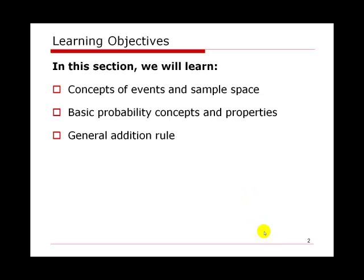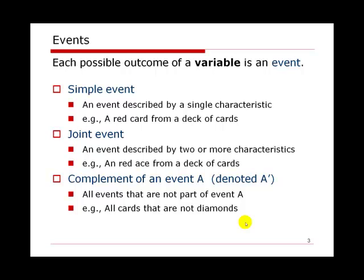An event is related with a variable. Each possible outcome of a variable is an event. Depending on how we describe the event, an event can be a simple event or a joint event. For a simple event, that is an event described by a single characteristic. For example, if we draw a card from a bridge deck and only look at the color, then the color will be a simple event.